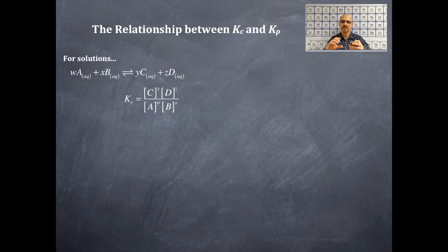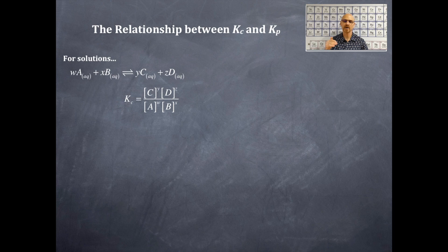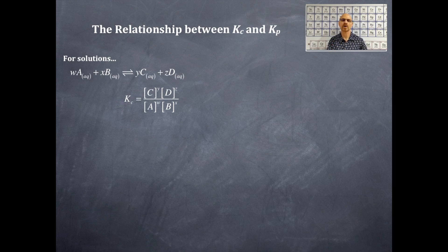So it's brackets with C to the power of Y — that's the exponent — D in brackets to the power of Z, that's also the stoichiometric coefficient as exponent, divided by A to the W, B to the X. Products over reactants, stoichiometric coefficients as exponents, all in solution, all aqueous, hence the brackets.